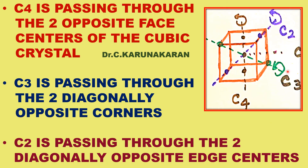In cubic crystal system, there are three types of axis of symmetry: four-fold (C4), three-fold (C3), and two-fold (C2). The C4 tetrad axis of symmetry passes through two opposite face centers. There are six face centers total, so 6 divided by 2 gives three C4 axes of symmetry in cubic crystal.